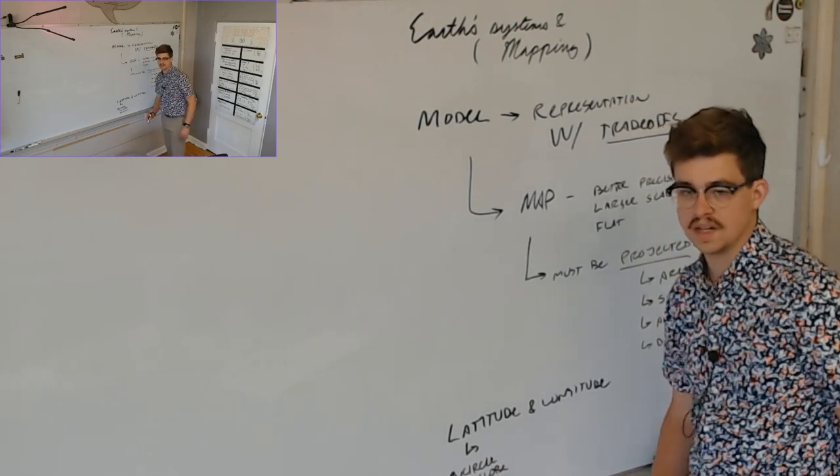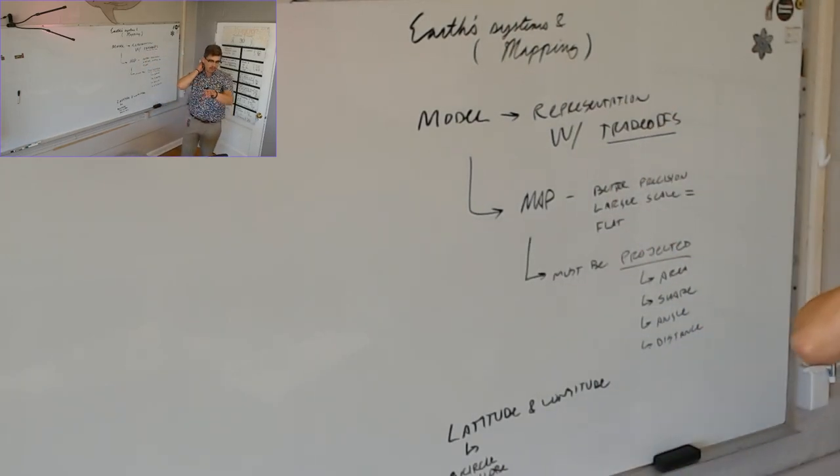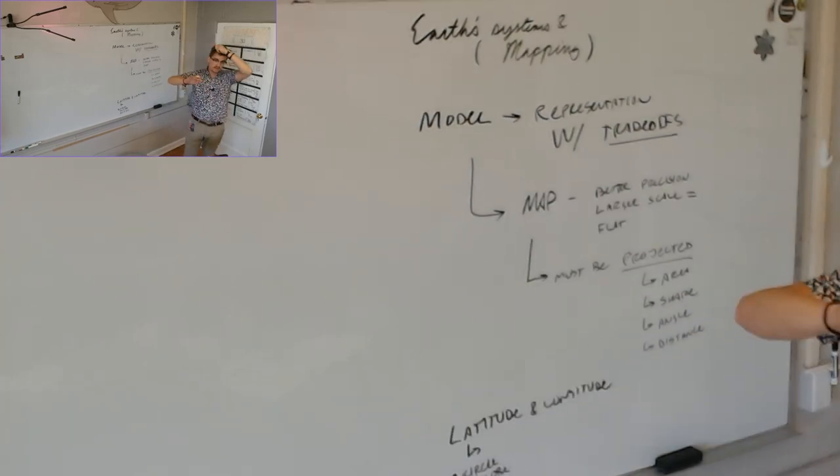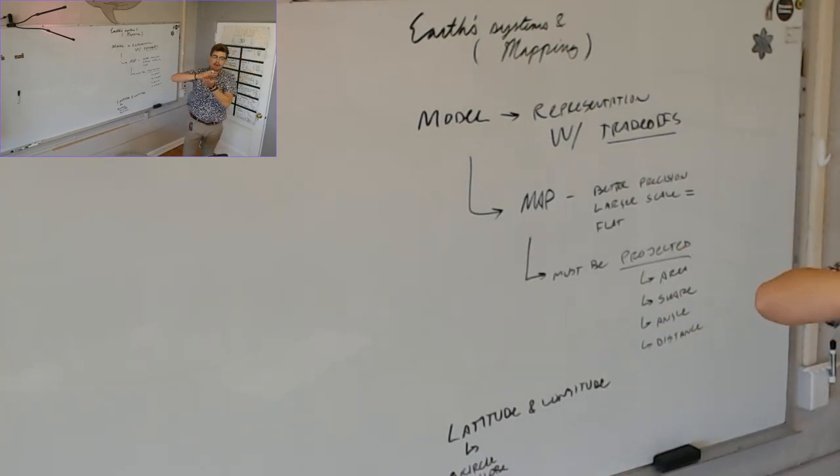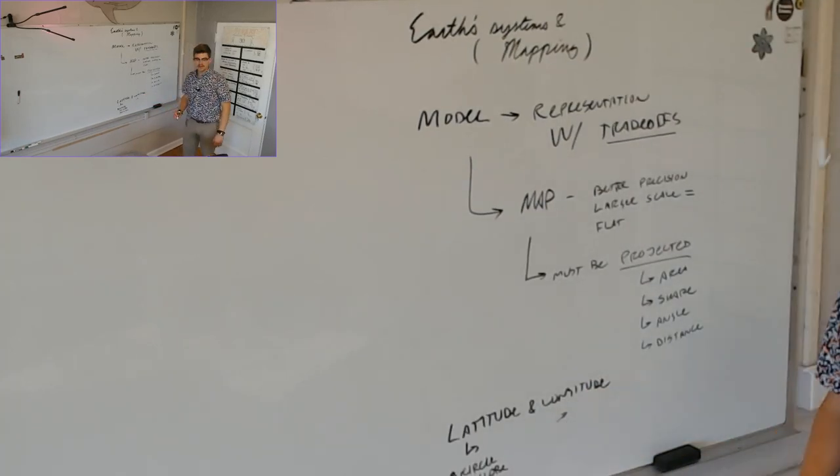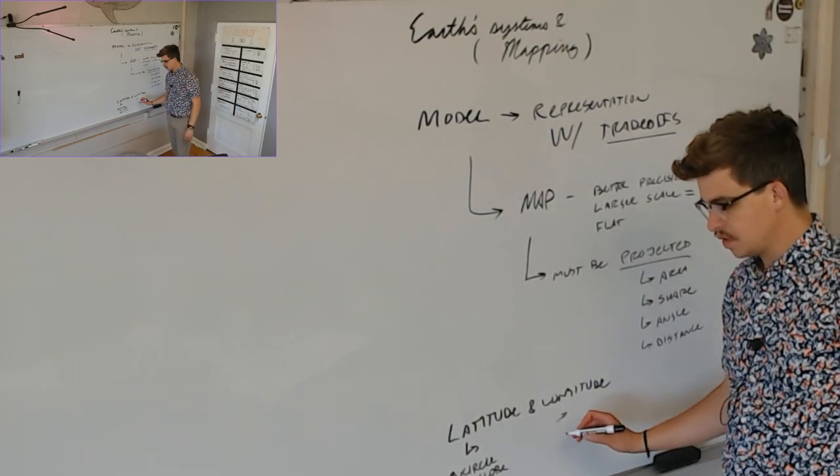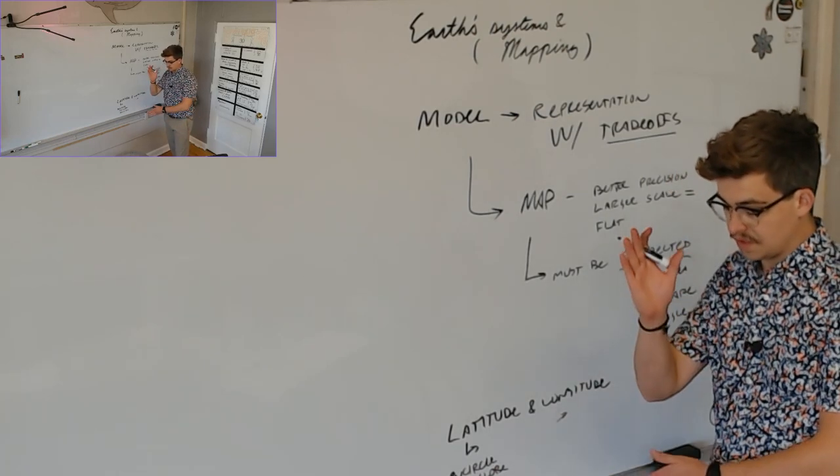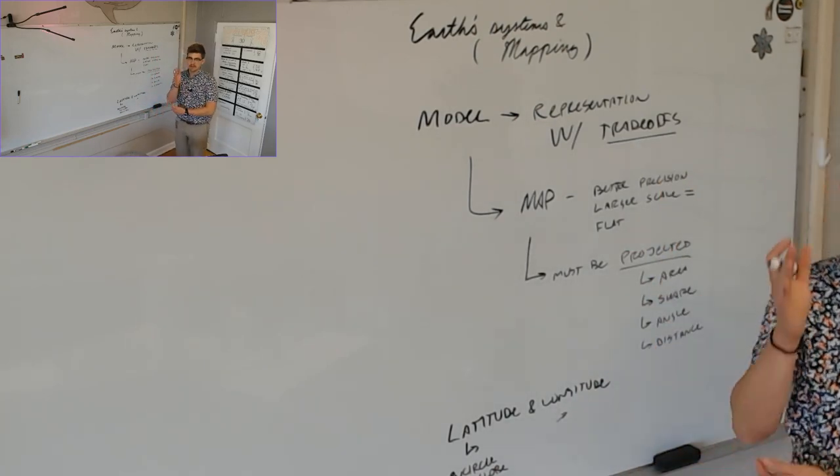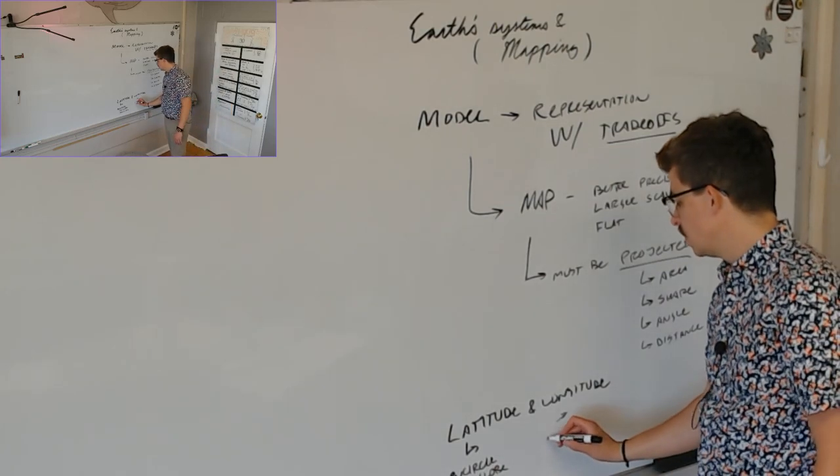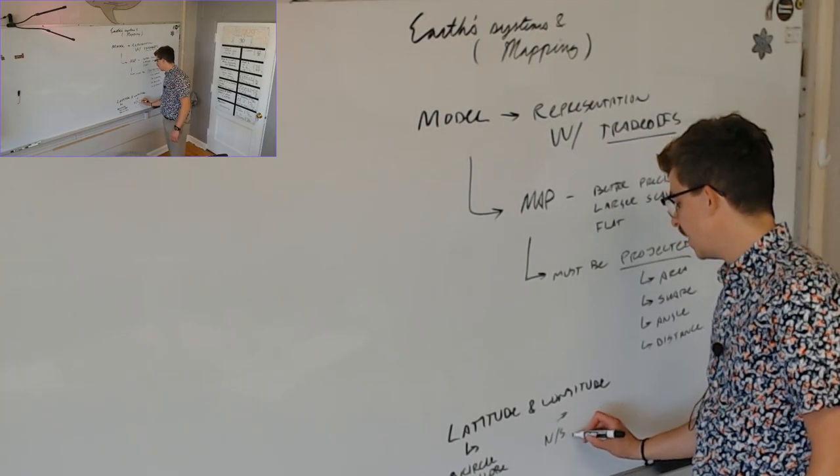Longitude, then? Longitude are the ones that are the north-south axis ones. The long ones. I don't know. They're both long. But you know what I mean. The ones that are running north-south axis.